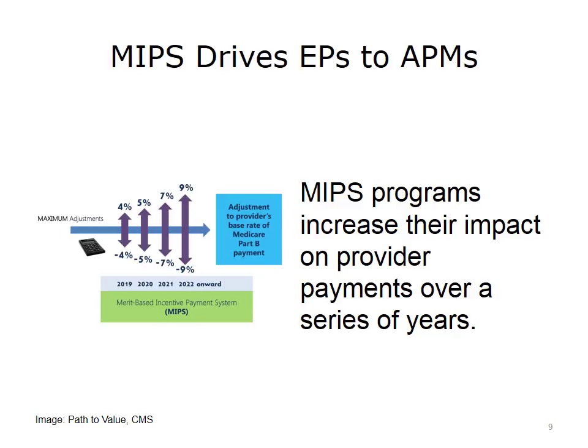Increasing the impact of incentive programs is a strategy that CMS used in the past and is also implementing for the future through the MIPS payment structure. With MIPS, eligible clinicians, either as individuals or a group, receive a MIPS composite performance score based on four factors. These factors include quality, resource use, clinical practice improvement activities, and advancing care information.